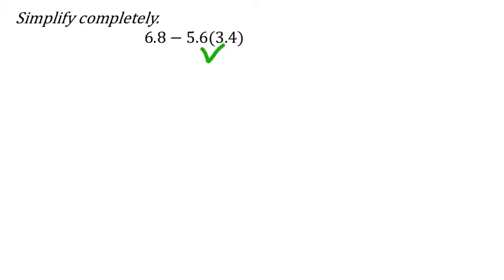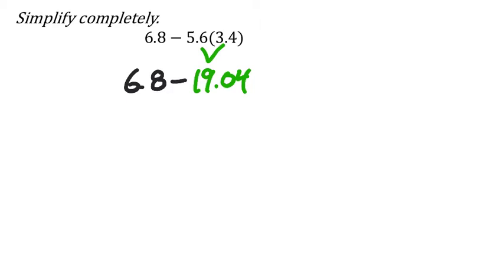We're going to simplify this completely. I'll show where the work comes from. 5.6 times 3.4 — that's 19.04. And then 6.8 minus 19.04. Let's type that in: 6.8 minus 19.04, enter — negative 12.24. To check, I'll type the whole thing into the calculator: 6.8 minus 5.6 times 3.4 in parentheses, enter — same answer, negative 12.24.